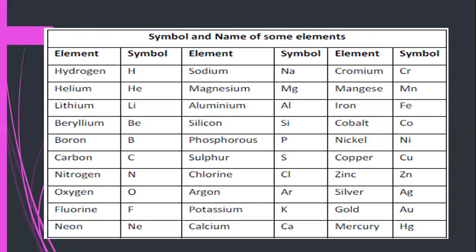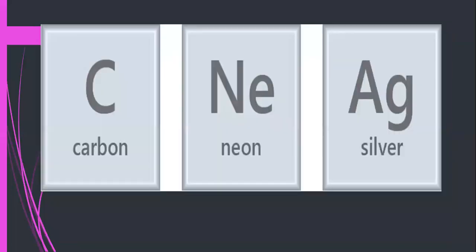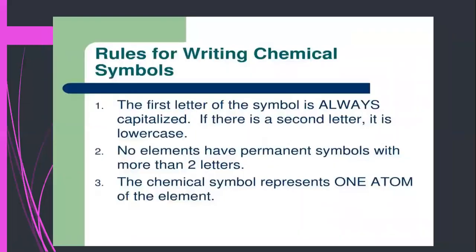Whenever we write any formula or equation, we use these symbols, and in the periodic table we use these symbols. So you are supposed to learn all of these element names along with their symbols. For carbon we use capital C, for neon capital N and small e, and for silver capital A and small g — Ag. The rules for writing chemical symbols: the first letter is always capitalized, and if there is a second letter it is always lowercase.